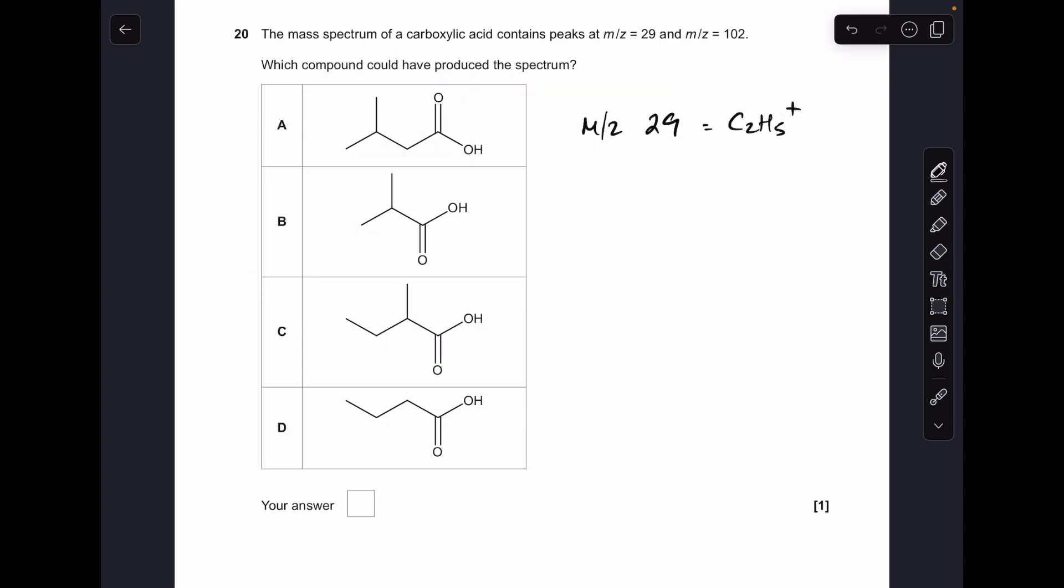And finally, number twenty: a fragment peak at m/z 29 due to a C2H5+ fragment, so that rules out A and B because they can't produce that fragment. And then to work out which one it was, I worked out the molecular formula and then the Mr. Obviously you can see 102 for C, so that must have been the molecular ion peak in the mass spectrum, so C is the answer.